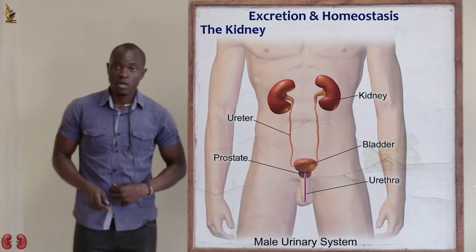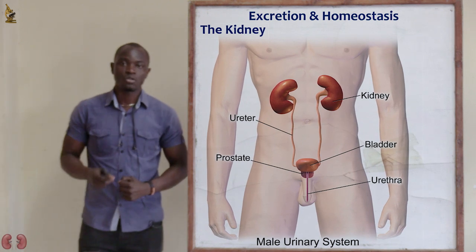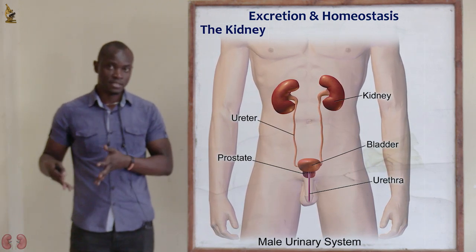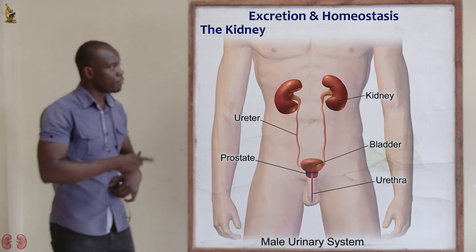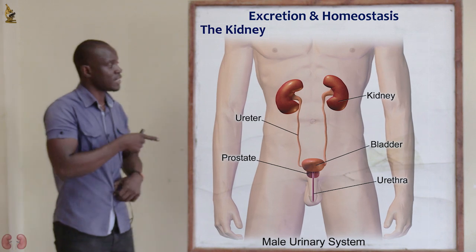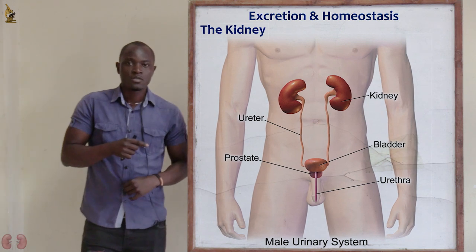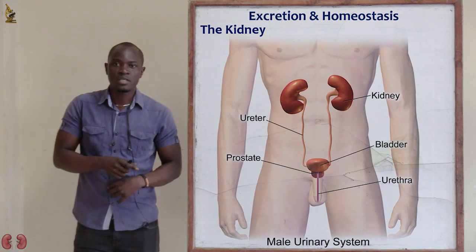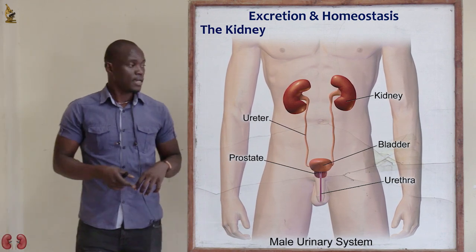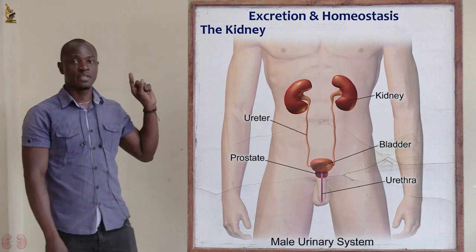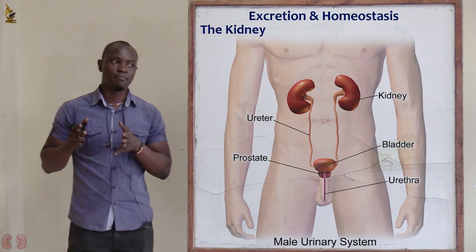Let's now look at the kidney. The kidney is an organ found in vertebrates, and each organism has two kidneys. The kidneys are bean-shaped and are dark red in color. They lie near the back of the abdominal cavity, above the level of the waistline — that is exactly where the two kidneys are positioned.